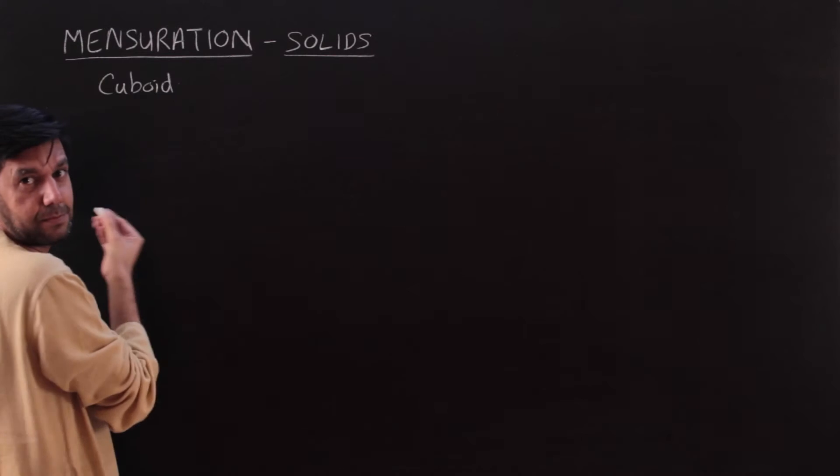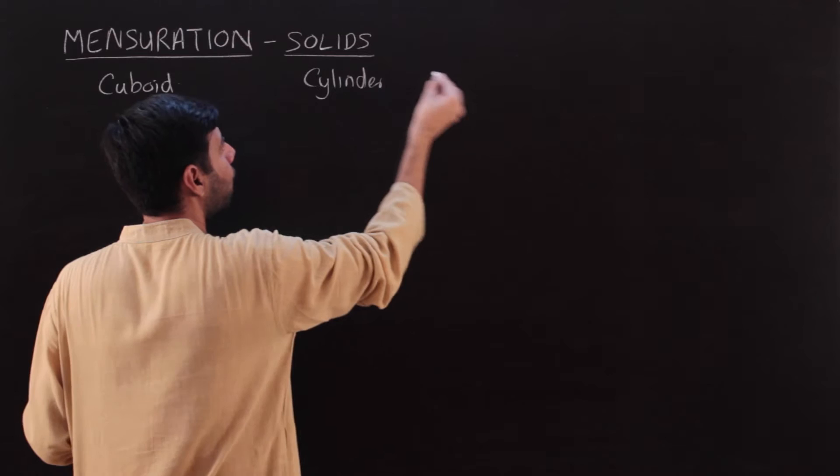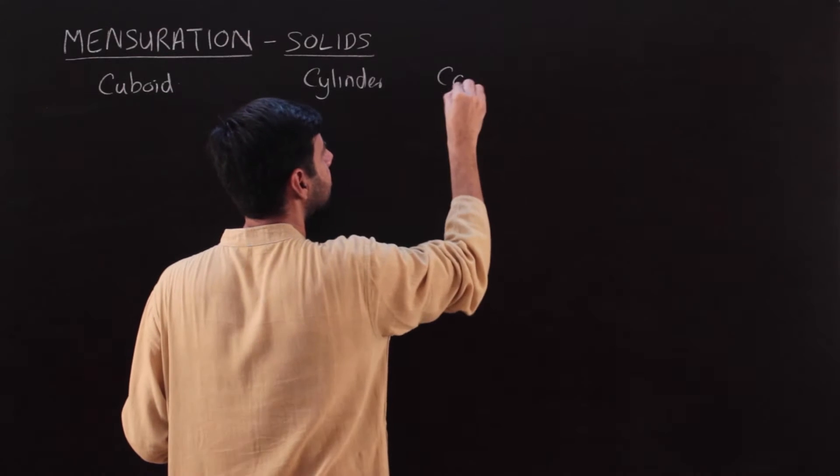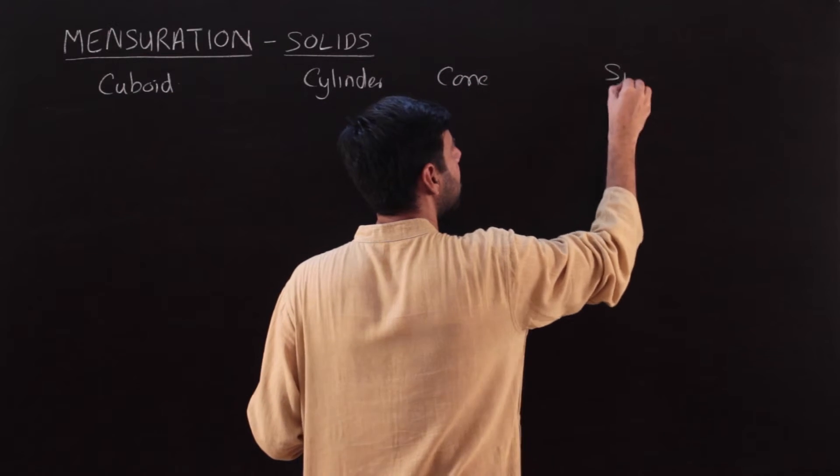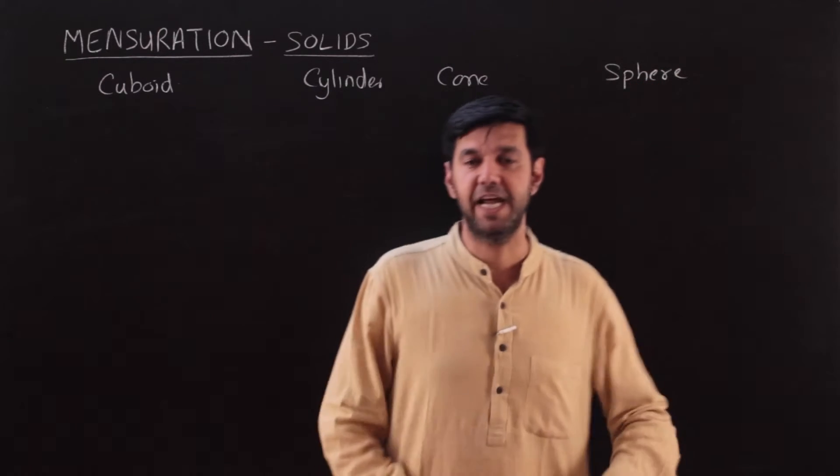Which are the most common ones? The most common ones are a cuboid, a cylinder, a cone, and a sphere. This is going to be the arena for this lecture.